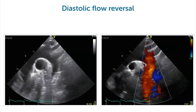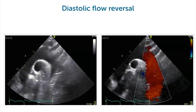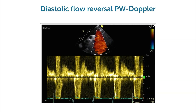If you put the pulsed wave Doppler somewhere right here, you will get a spectrum that looks like this. Consider diastole — the most of this reversal flow happens during the early diastolic period but stays high.